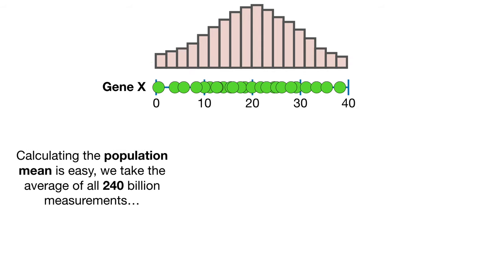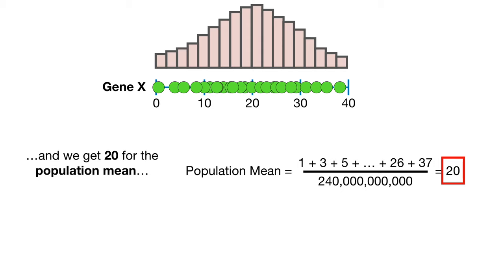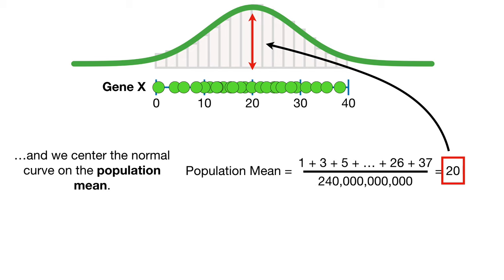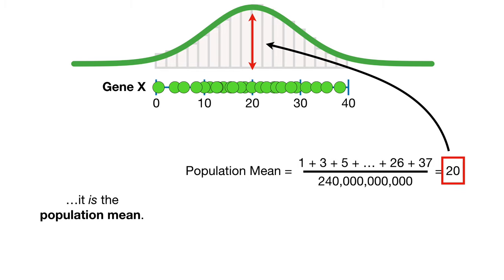Calculating the population mean is easy. We take the average of all 240 billion measurements, and we get 20 for the population mean. We center the normal curve on the population mean. Note, because we calculated the mean with all 240 billion measurements in the population, this is not an estimate of the population mean — it is the population mean.